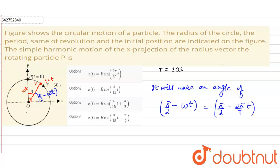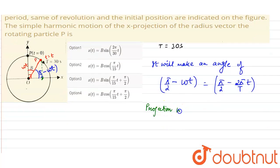Now the projection of this particle on the x axis will be given as x(t) will be B cos(π/2 minus 2π/T times t).